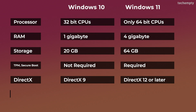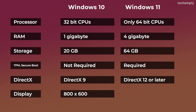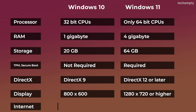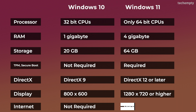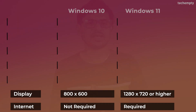Talking about the display, Windows 10 only requires an 800x600 display while Windows 11 requires 1280x720 or higher. And Windows 10 does not require an internet connection to set it up for the first time and does not require a Microsoft account. But Windows 11 requires an internet connection and a Microsoft account to set up the system on first use.